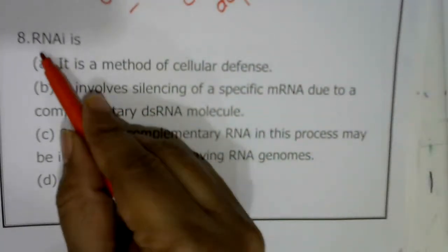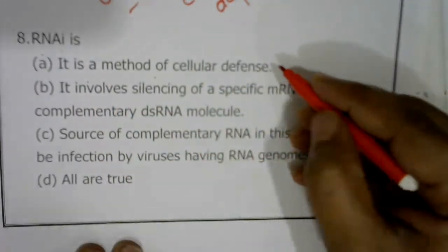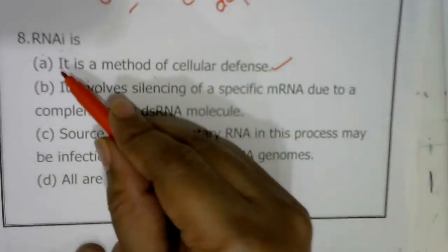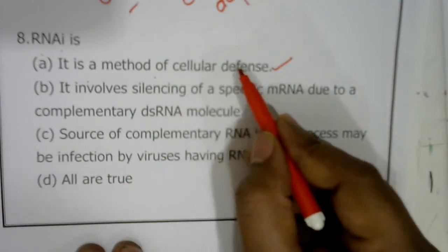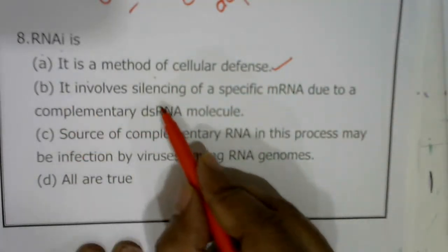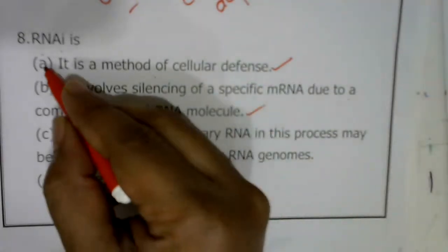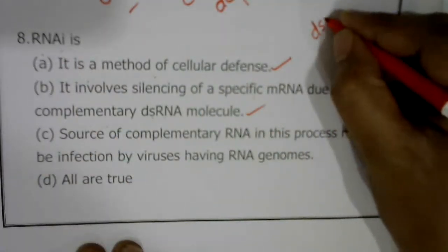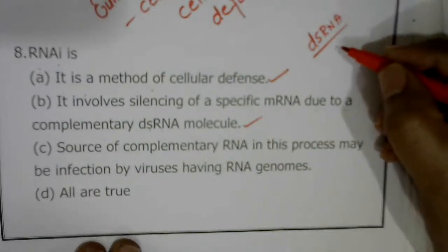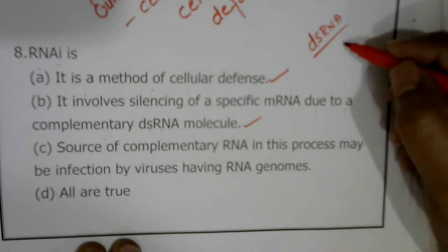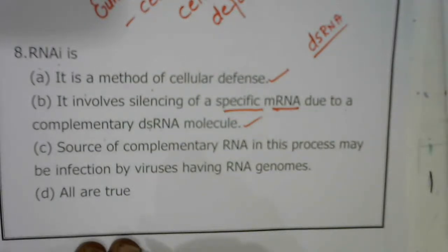Question eight: RNA interference is a method of cellular defense — correct — because it occurs in eukaryotic cells to protect from viral infection. It also involves silencing of a specific mRNA due to a complementary dsRNA molecule — also correct. In RNA interference we use dsRNA because it has two strands: one sense and one antisense. The antisense strand pairs with the specific mRNA.